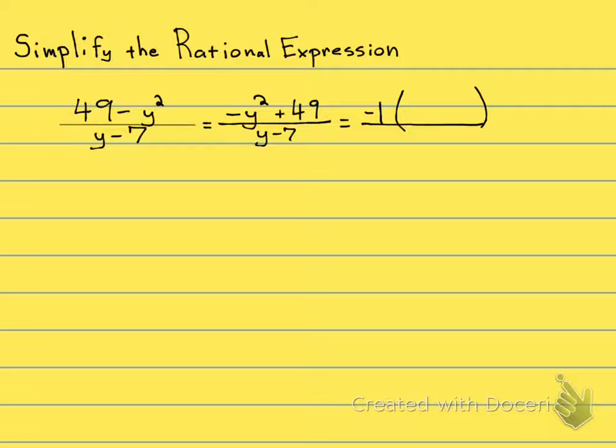the negative 1, both of these signs will change. I'm dividing both of these by a negative, so I'm gonna have y squared minus 49. The denominator is the same; it just keeps tagging along.